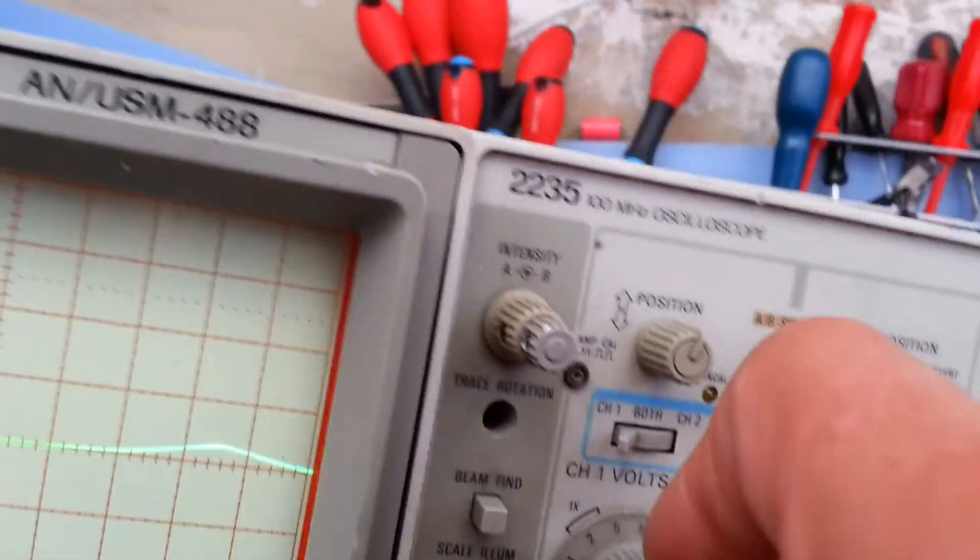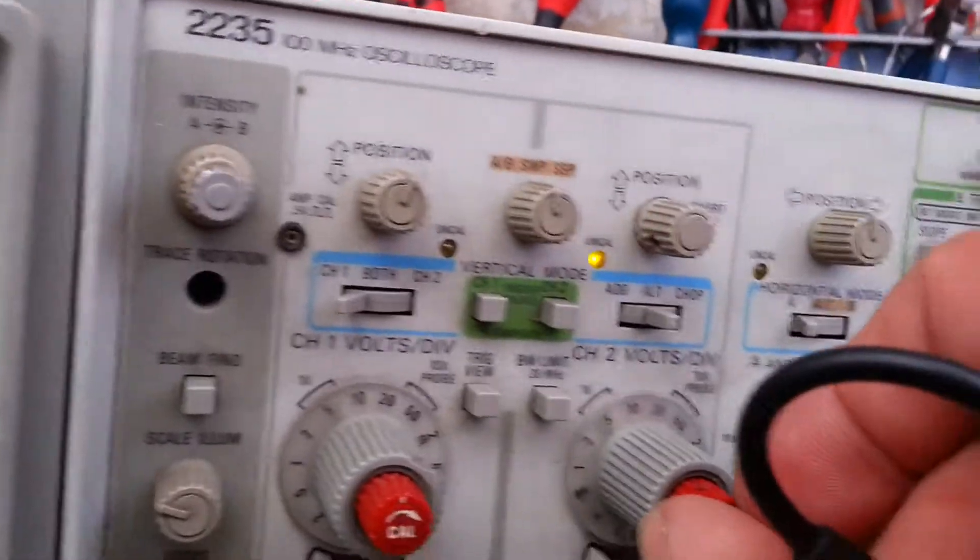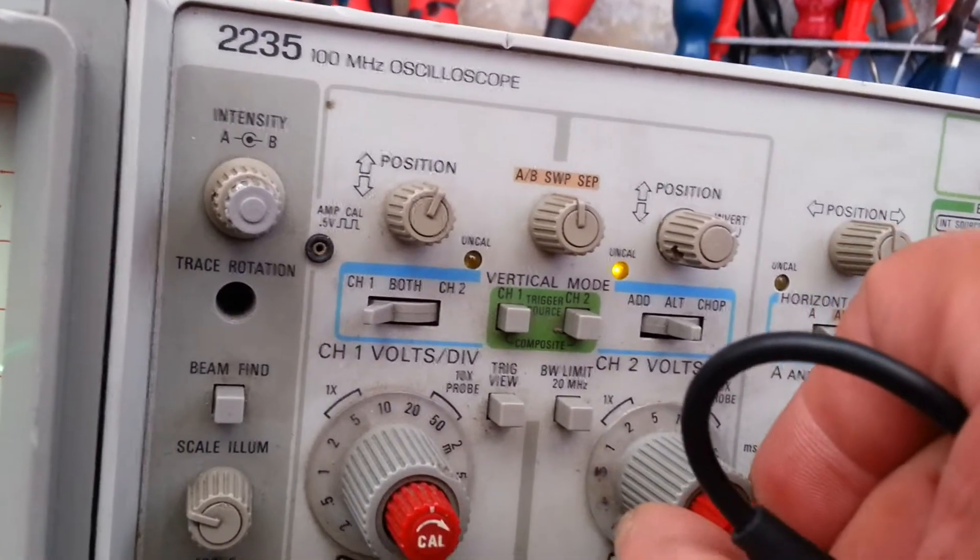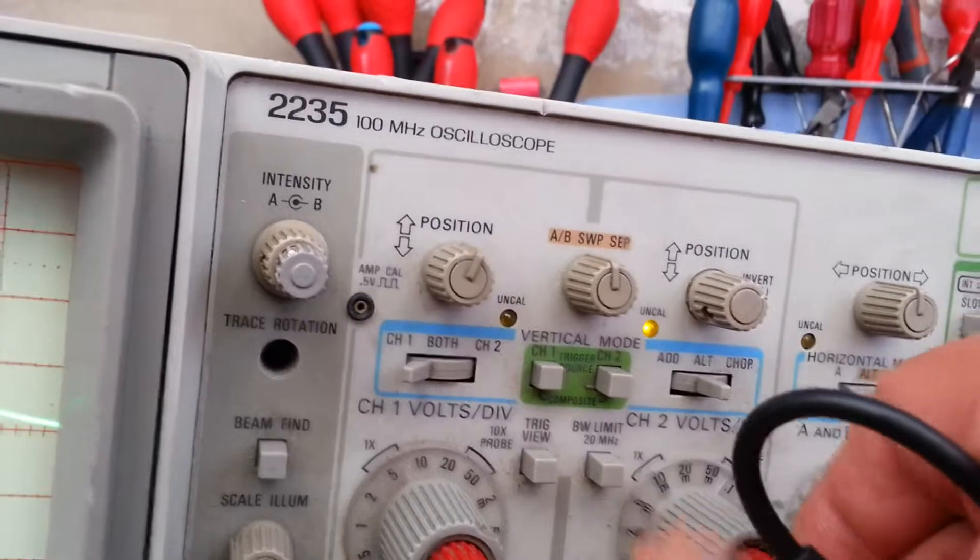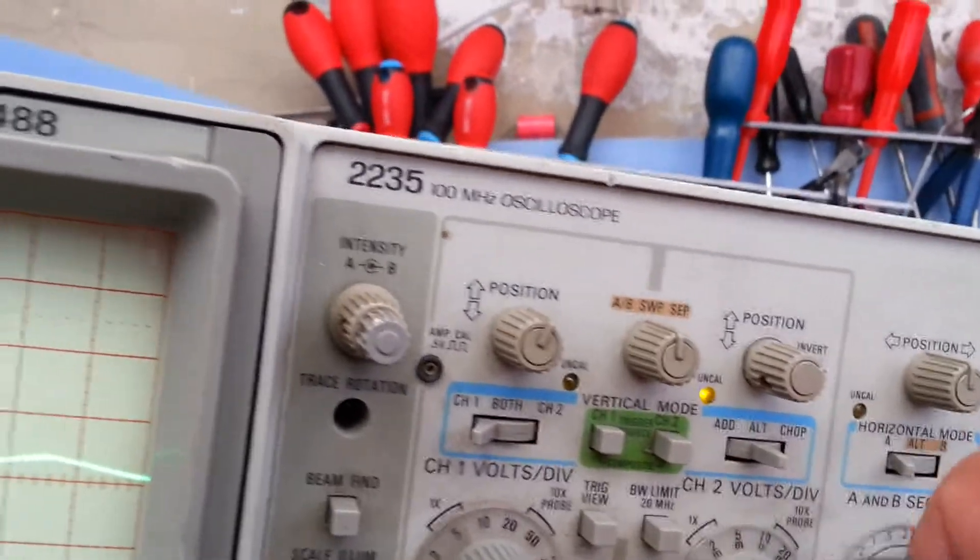But it looks like that was probably slightly slipped. What is that? Is that 5 millivolts? Yeah, I mean that dial is what you do. Oh there we go. There's the minimum scale. So 2 millivolts per division.